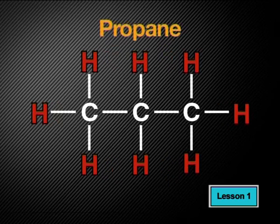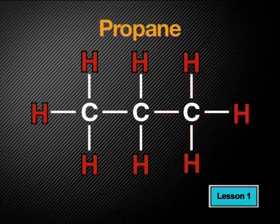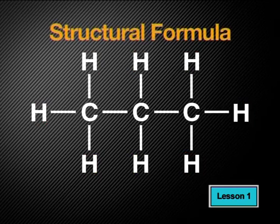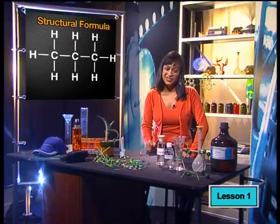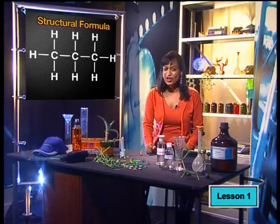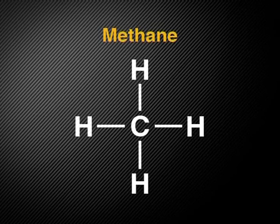In propane, the three carbon atoms each have their usual four bonds and hydrogen atoms. When we draw molecules this way, we show their structure with the position of atoms and bonds. We call these two-dimensional drawings structural formulae. We can also write the chemical formulae of organic molecules starting with carbon. We call this the molecular formula. It only lists the number of each type of atom but does not tell us how they are arranged inside the molecule.